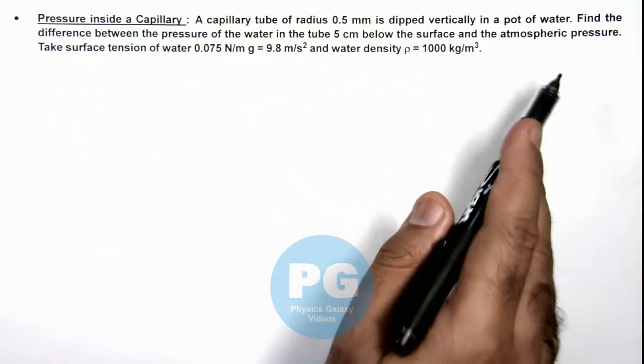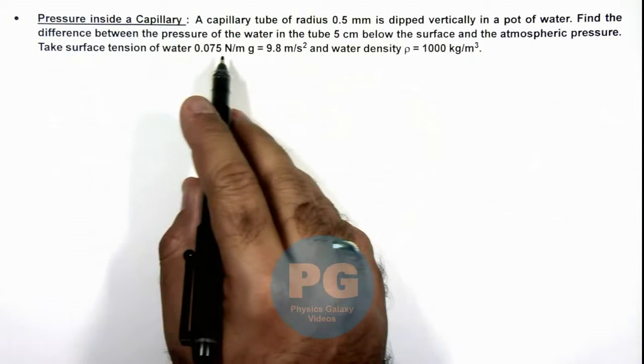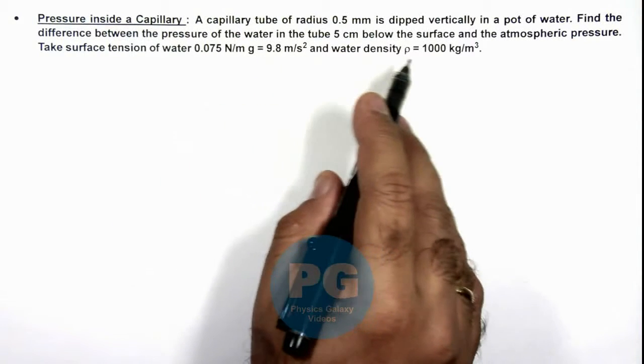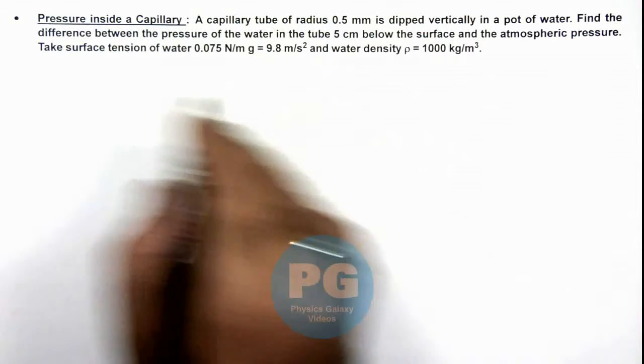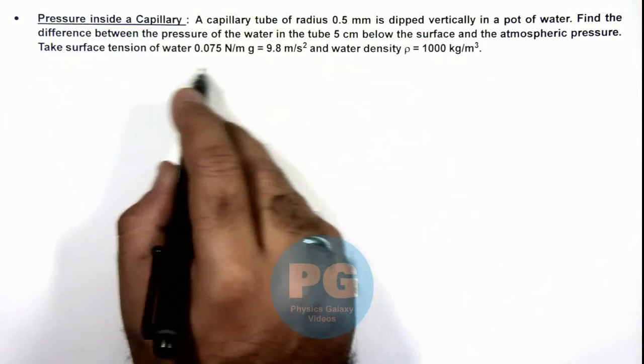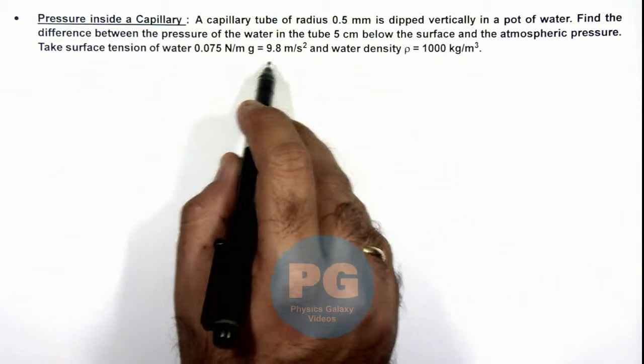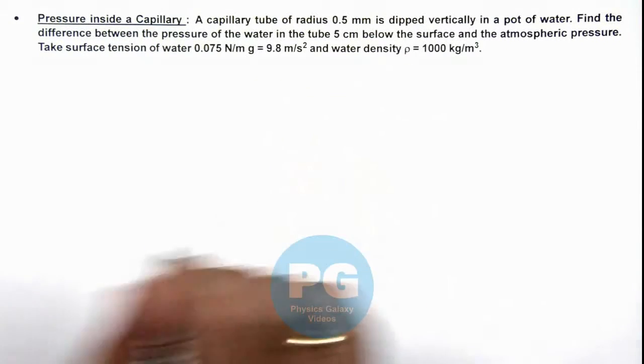We are required to find the difference between the pressure of the water in the tube 5 centimeters below the surface and the atmospheric pressure. We are given surface tension of water to be 0.075 N/m, g to be 9.8 m/s², and water density is 1000 kg/m³.